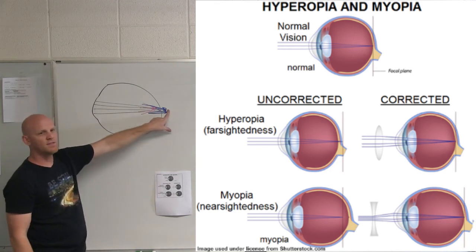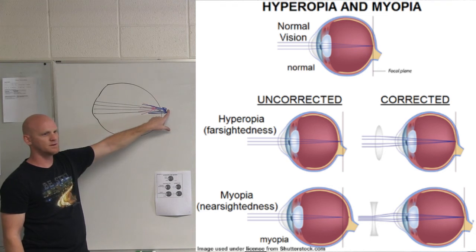Now, in the case of the ones that would go beyond this, you want them to converge sooner or later? Sooner, which means you need to use a converging lens.